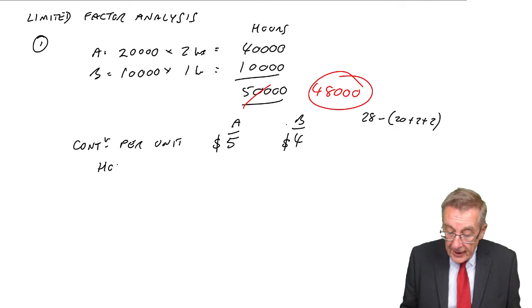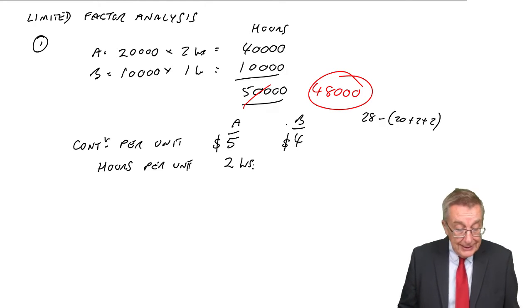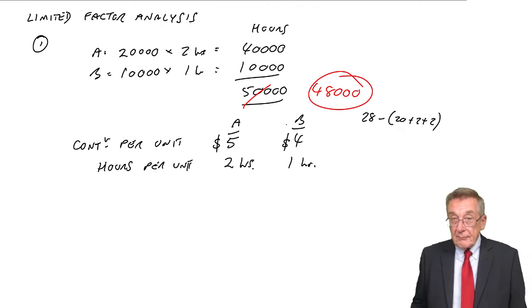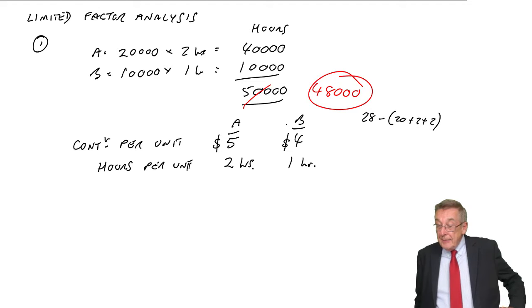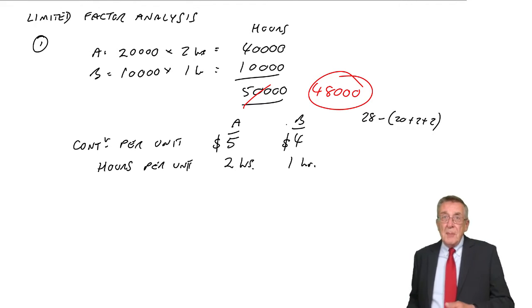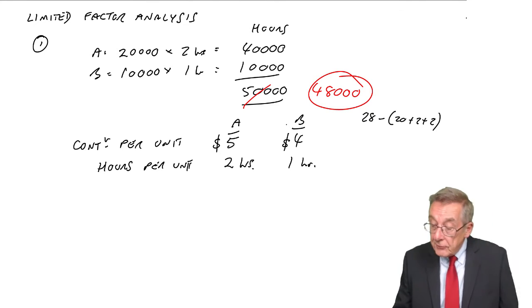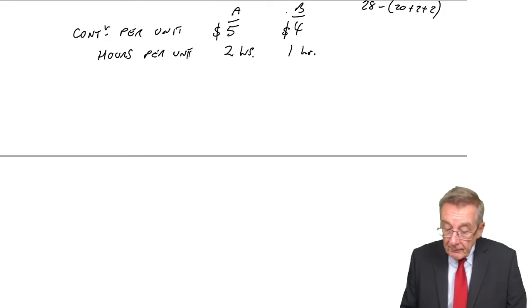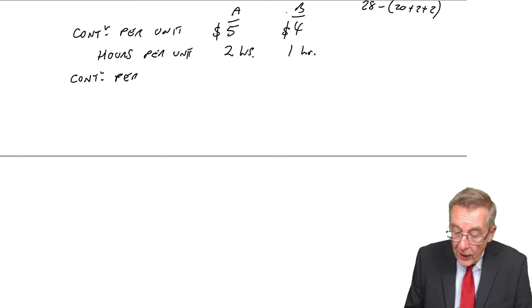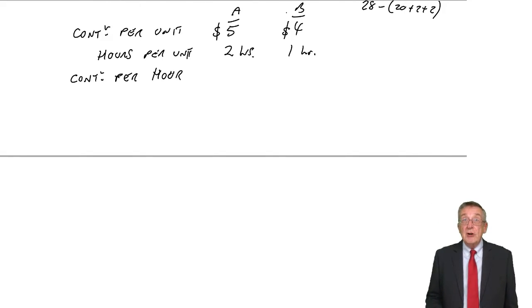At first glance, A looks like the better one because it makes a bigger contribution. But the problem is the hours. The hours per unit - every A we make needs two hours of machine time, every B only needs one hour. Think about it. It means that even though A gives more per unit, if you've got two hours available, you could either just make one A and get $5, or instead you could make two B's. Two B's at $4 each would be $8. I'd rather do B. Standardly, to decide which is the better of the two, we look at the contribution per hour.